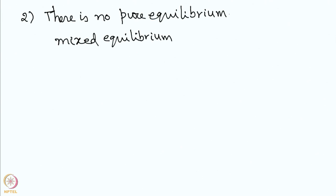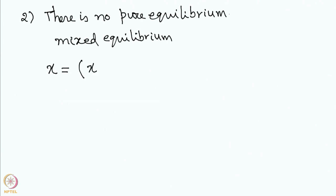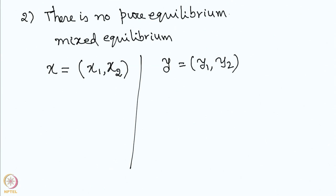Because there is no pure equilibrium and there are only two pure strategies with no pure equilibrium, the players are going to play both strategies. So for player 1, strategy x = (x1, x2), and for player 2, y = (y1, y2), we know x1, x2 > 0 and y1, y2 > 0.